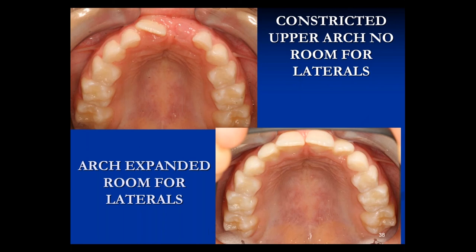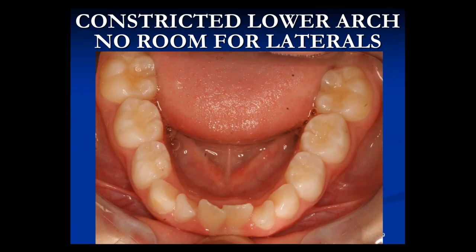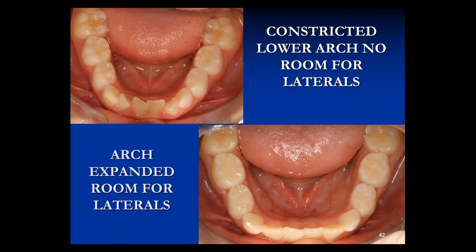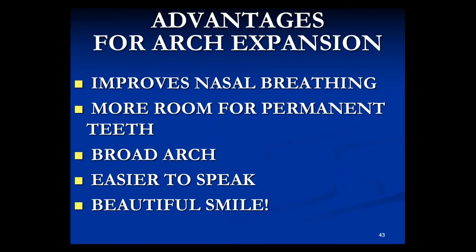There he is, a little older — he came in at six, now he's about eight. Look at his beautiful arch; he never came back for braces. All the permanent teeth must have come in beautifully. The same thing on the lower — the lower arch was crowded, two front teeth crowded with the laterals crowded too. Use a lower appliance and expand the lower. Just bring him in, make sure the clasps are fitting, make sure he's wearing it, keeping it clean, and it develops beautifully. Where would you rather be a tongue? There's a lot more room in the lower picture. You're making room for the teeth, easier for him to speak. When you expand the upper arch, you make room to breathe through the nose. So you improve nasal breathing, more room for permanent teeth, broader arch, easier to speak, beautiful smile. Why wouldn't you do it?